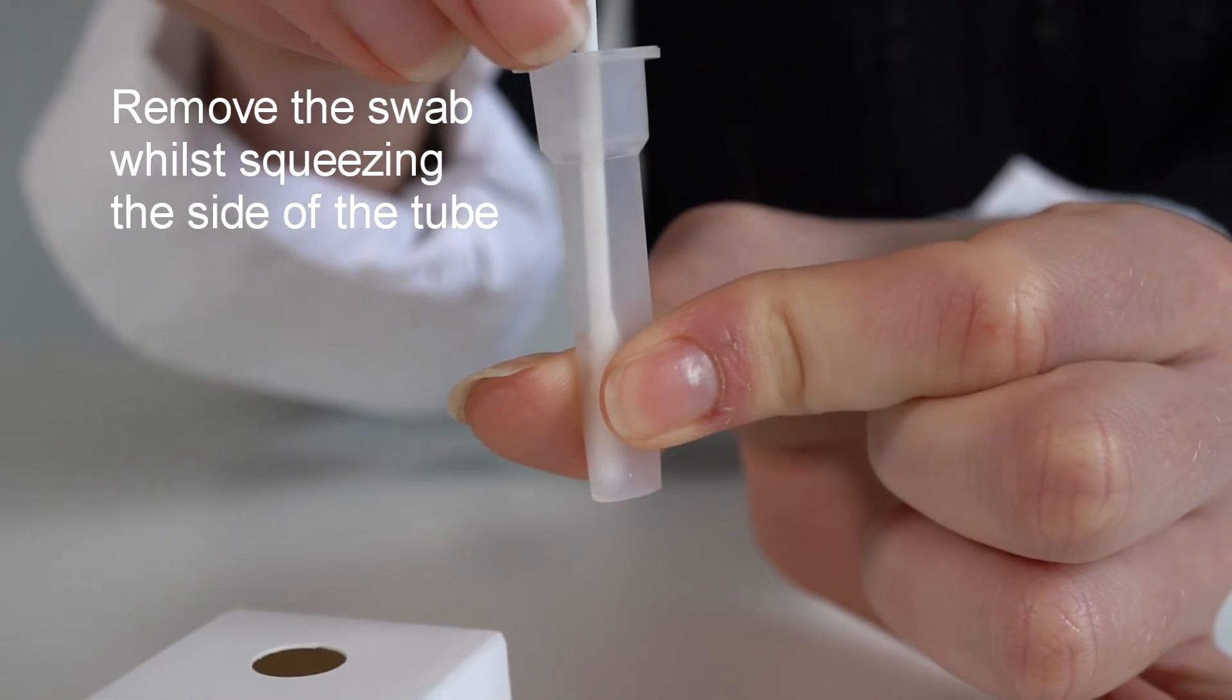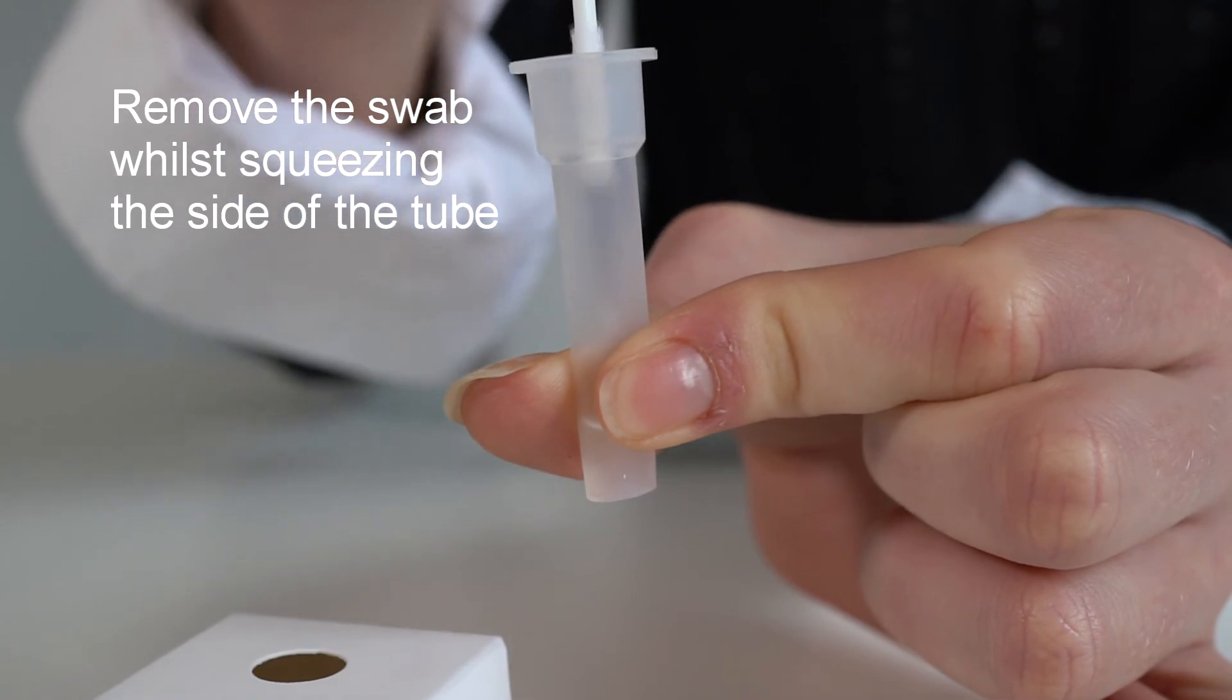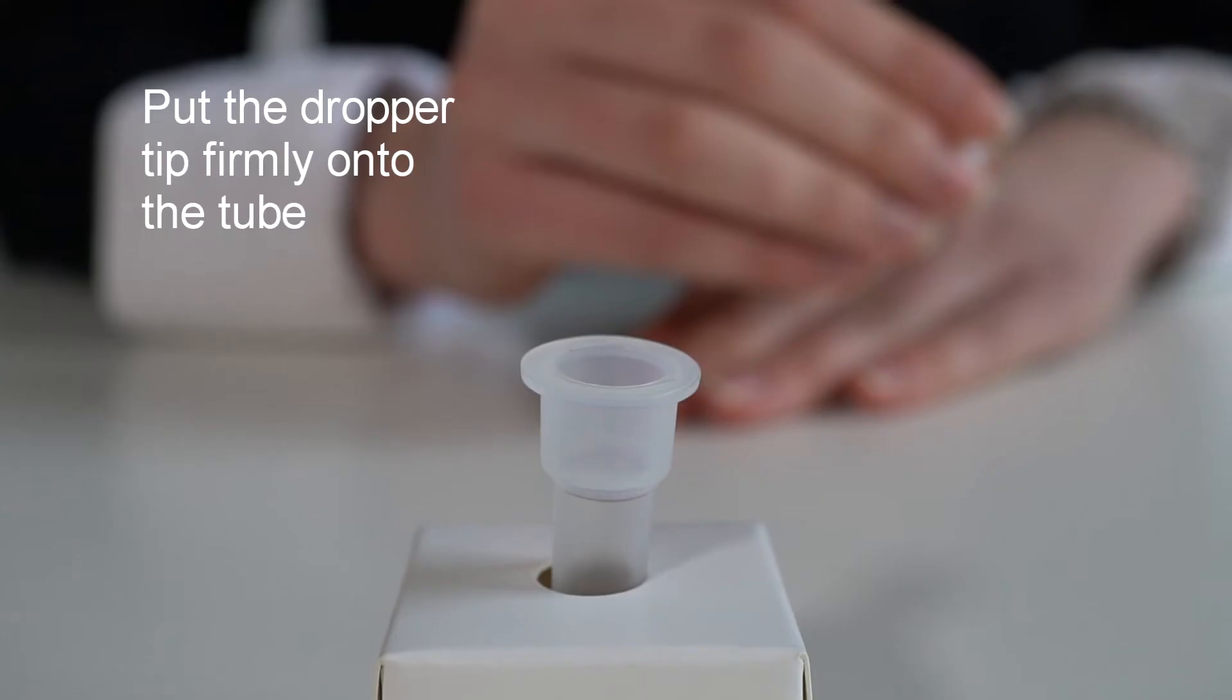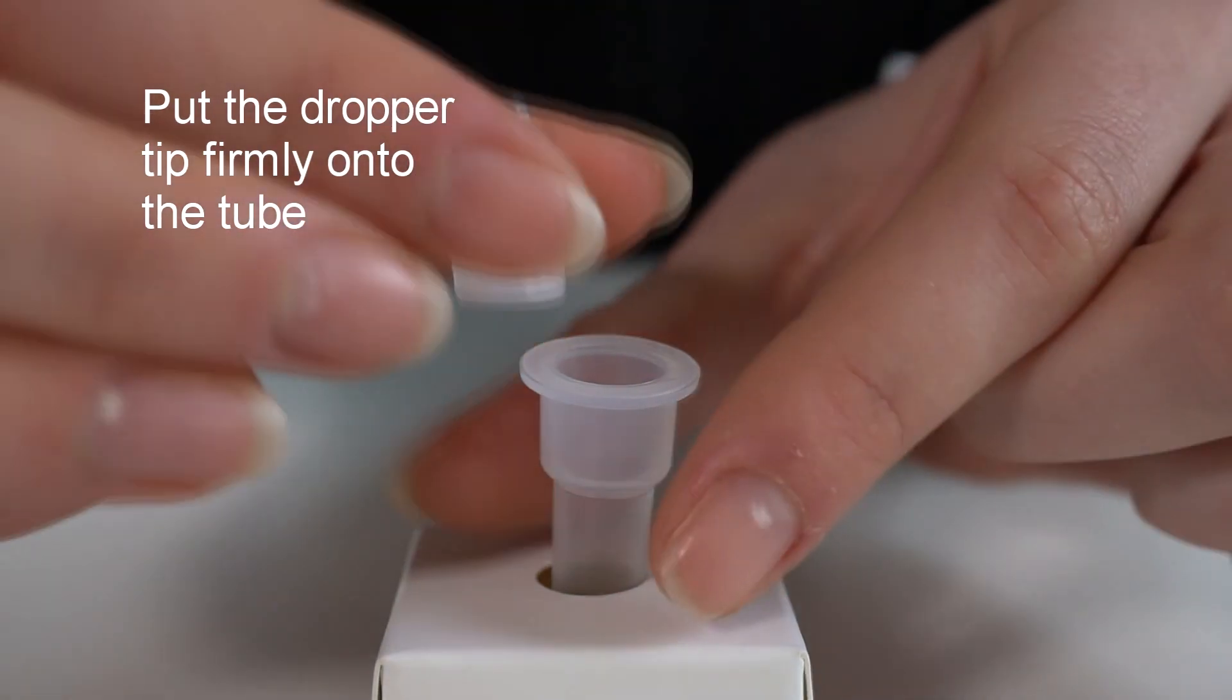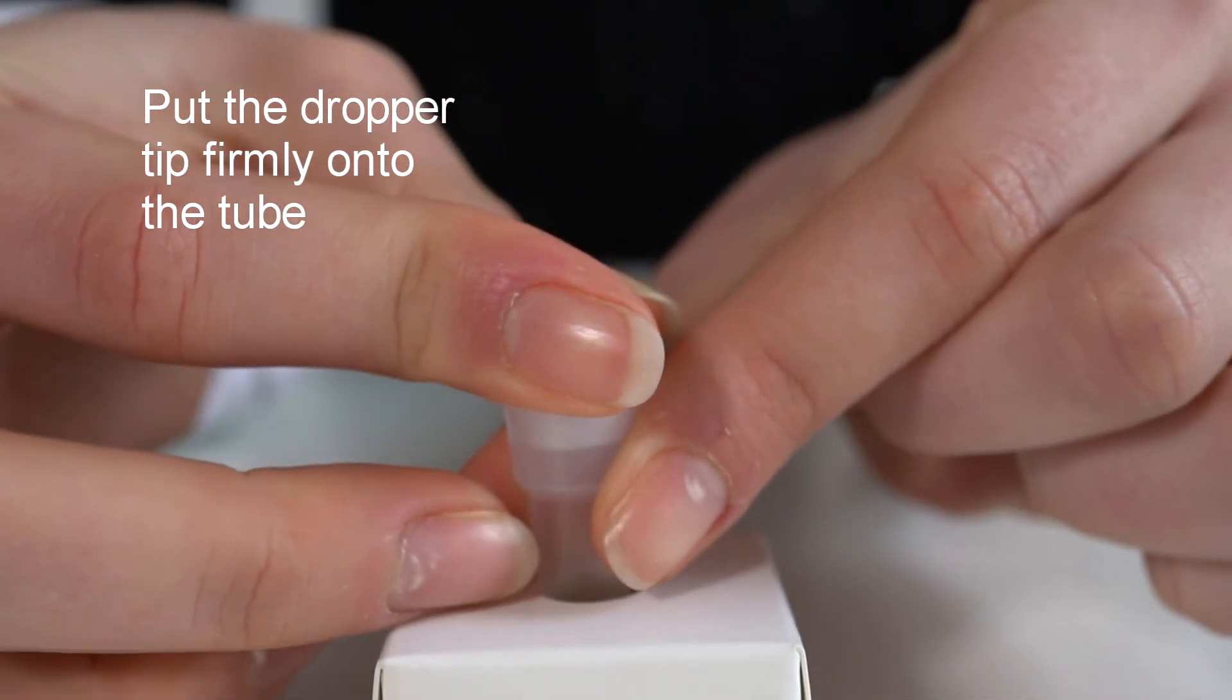Take the swab out of the tube by squeezing the sides of the tube tightly together. Take the nozzle and place it on top of the extraction tube.